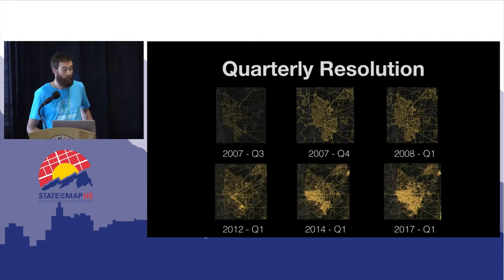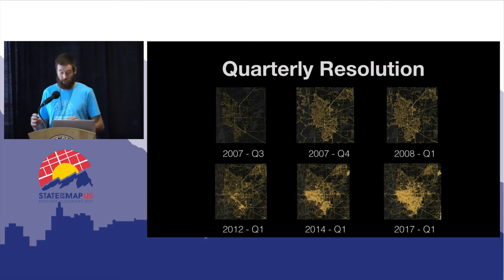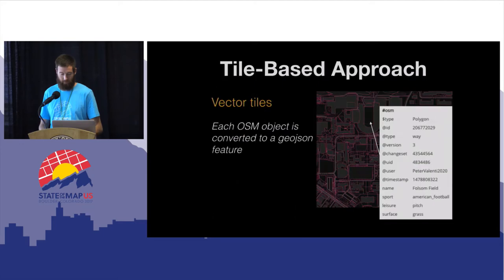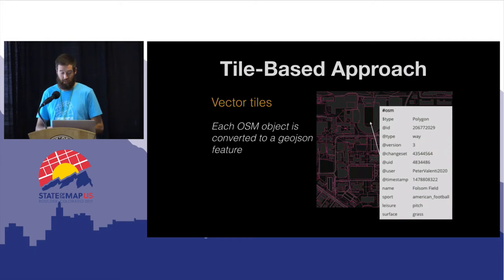We create a tile set that represents a snapshot of the map at every three months over the past 11 years, achieving quarterly resolution of the map's history. Here's Boulder at this quarterly resolution. The top row shows growth over the first three quarters during the rapid growth of the US map during the Tiger import. The bottom row shows growth in the last five years as buildings have been added to the map. Each map object in these tiles contains attributes giving us an idea of when it was last edited, by who, and what it is.